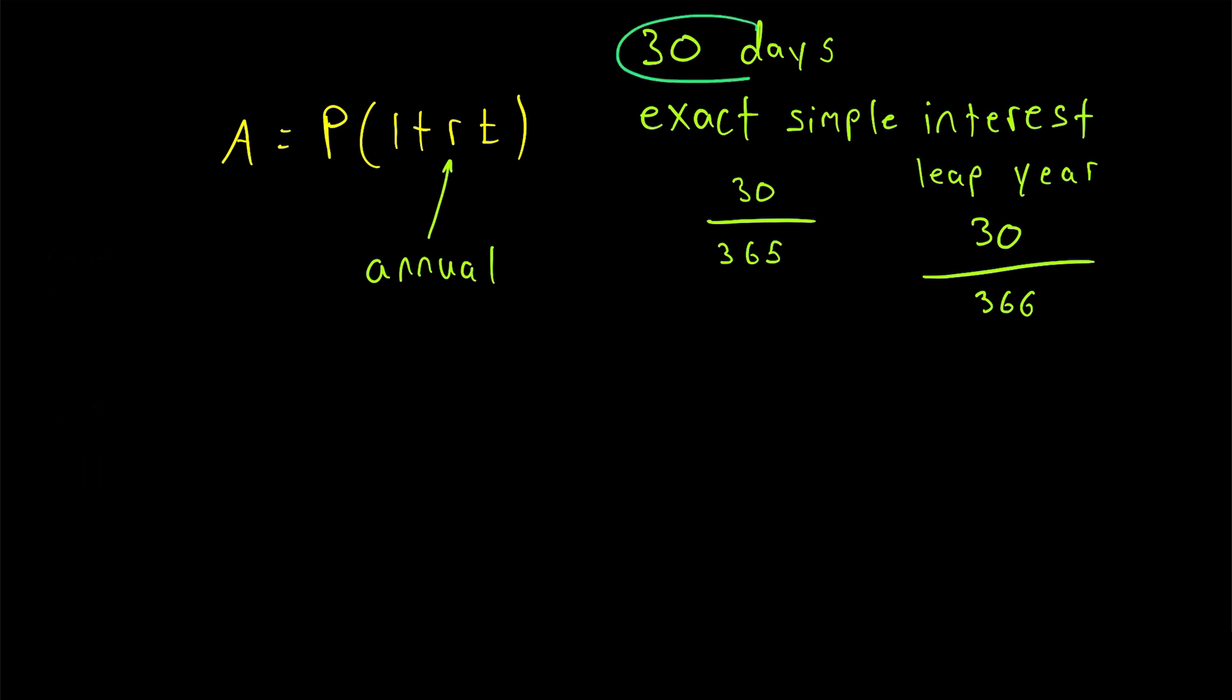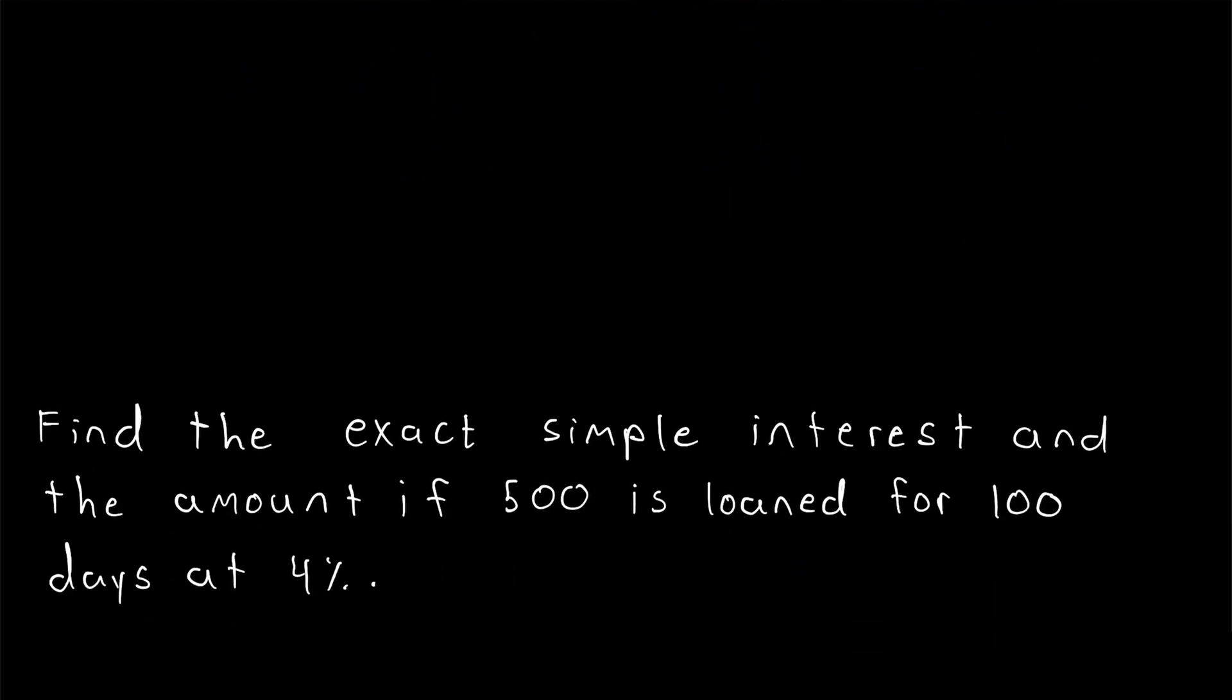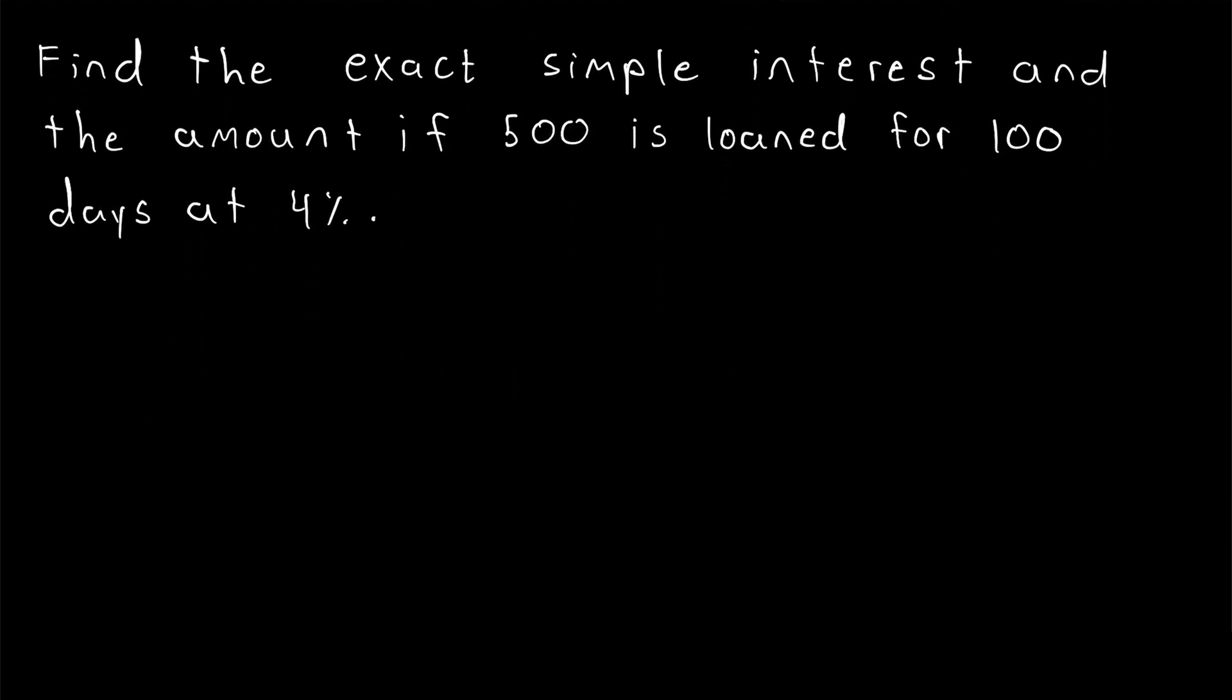And again, to convert days to years under exact simple interest, we divide the number of days by 365 unless it is a leap year, in which case we divide the number of days by 366. Alright, that's enough of that. Let's just get into a couple practice problems to make sure we understand.